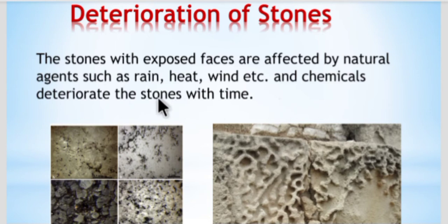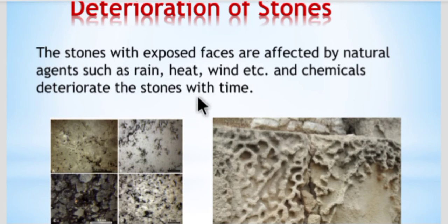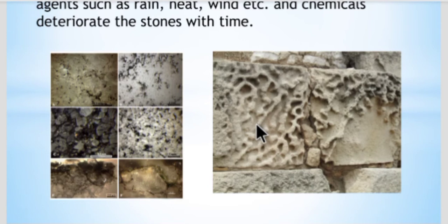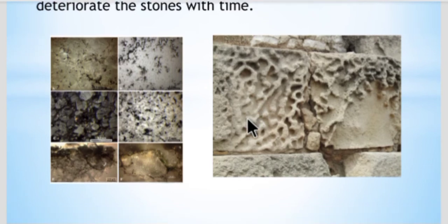These are pictures showing how stone gets deteriorated. You can see the black color patches on the stone surface, which indicate deterioration. We will now see, one by one, what are the reasons that make stone deteriorate.